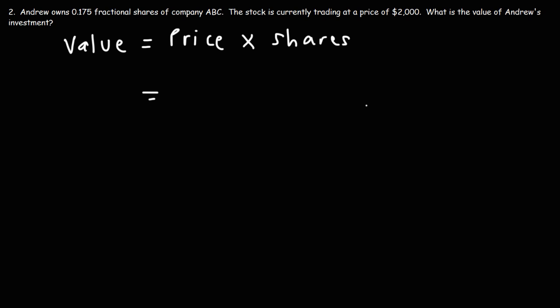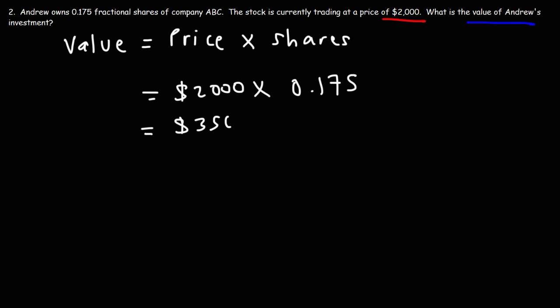In this problem, we want to calculate the value of Andrew's investment. We know the price of the stock is $2,000 — it's very expensive — but Andrew doesn't have enough money to buy one share, so he buys 0.175 fractional shares. If we multiply 2,000 by 0.175, we get $350. That is the value of 0.175 fractional shares of a stock trading at $2,000.